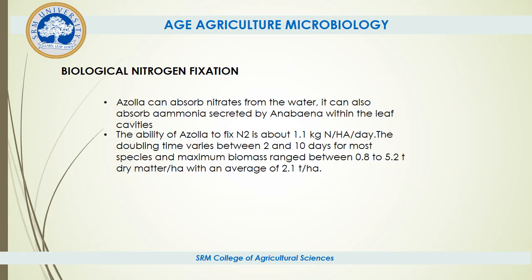Regarding biological nitrogen fixation, Azolla can absorb nitrates from the water and can also absorb ammonia secreted by Anabaena within the leaf cavities. The ability of Azolla to fix N2 is about 1.1 kg per hectare per day. The doubling time varies between 2 and 10 days for most species, and maximum biomass ranges between 0.8 to 5 tons of dry matter per hectare, with an average of 2.1 tons per hectare.